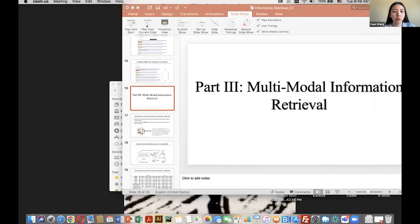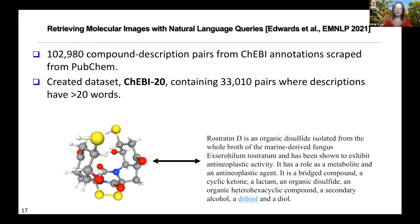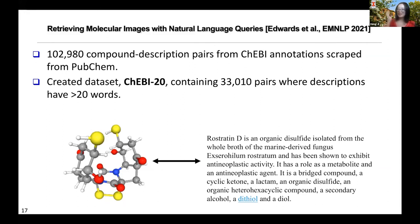We now talk about the third part: multimodal information retrieval. All the work described so far uses natural language as a query — the traditional information retrieval paradigm. However, the most fascinating aspect of the scientific domain is that it is always multimodal. For example, if I want to search for a molecule, I could describe it in natural language, but the most efficient way might be to just draw the graph structure. Conversely, I might have a natural language description of a molecule and want to search for images and descriptions using that text query. We need to bridge these two different data modalities.